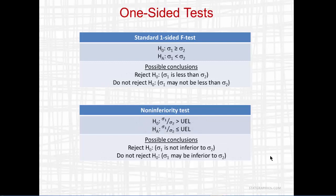There are also cases where we wish to show that one standard deviation is not inferior to a second. If we did a standard one-sided F test, the null hypothesis would be that sigma 1 is greater than or equal to sigma 2, and the alternative hypothesis that sigma 1 is less than sigma 2. In that case, the possible conclusions would be reject H0, in which case sigma 1 is less than sigma 2, or not reject H0, in which case sigma 1 may not be less than sigma 2.